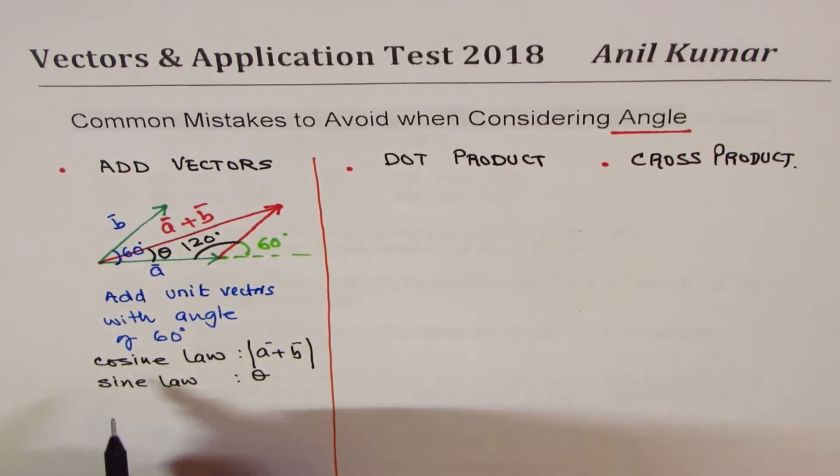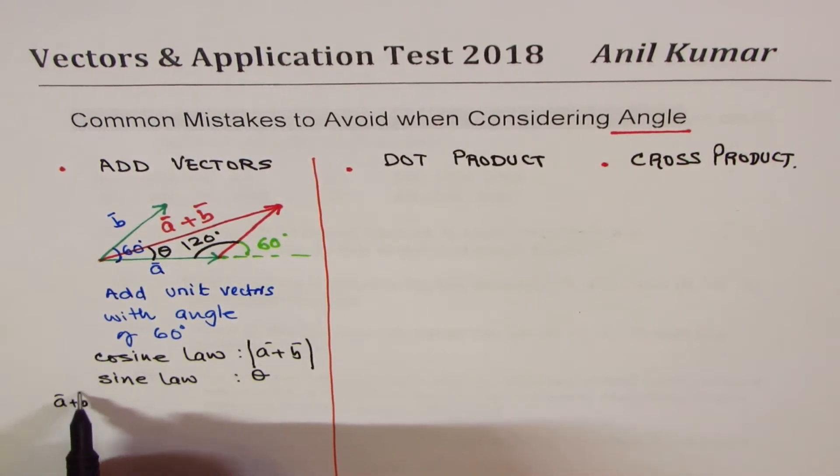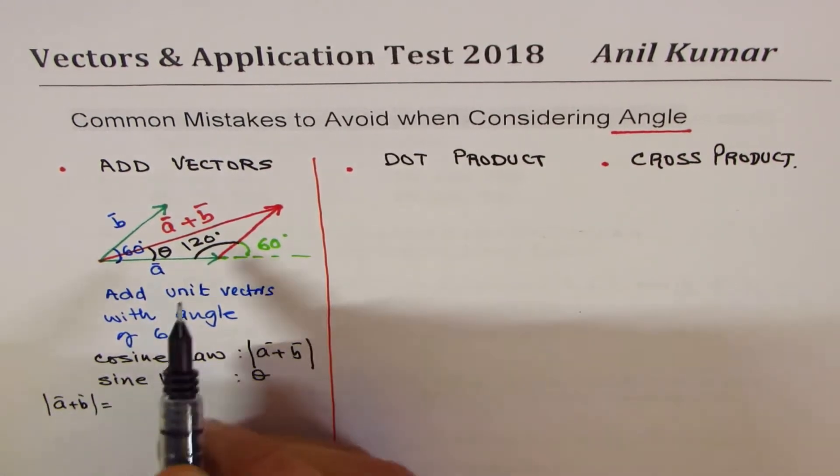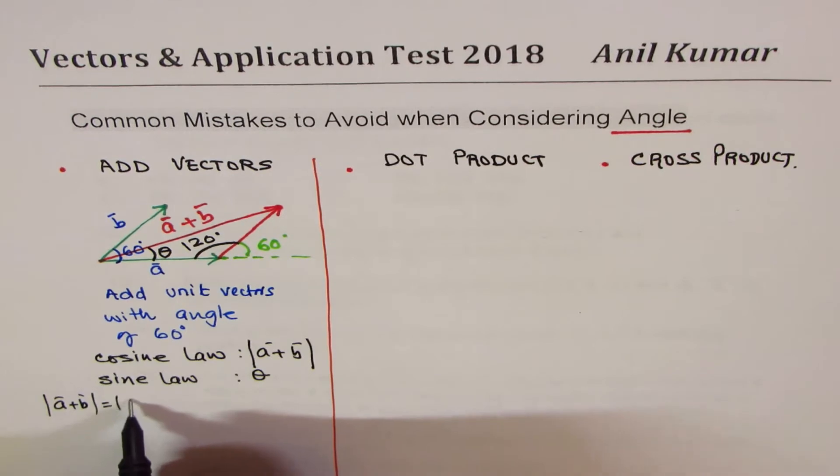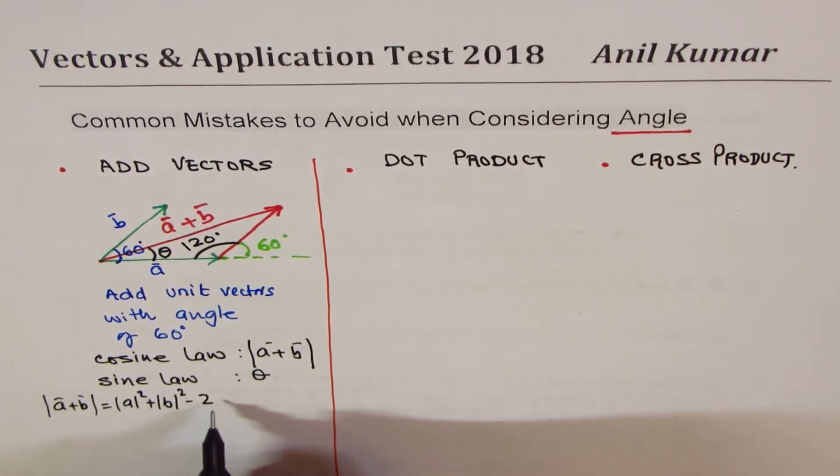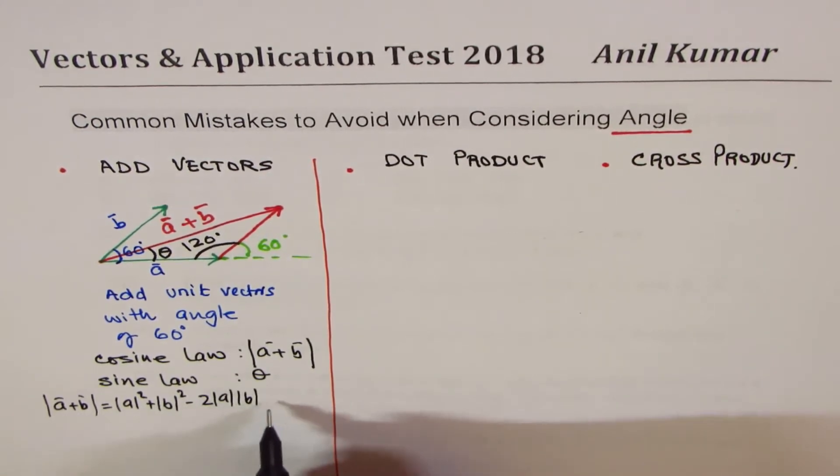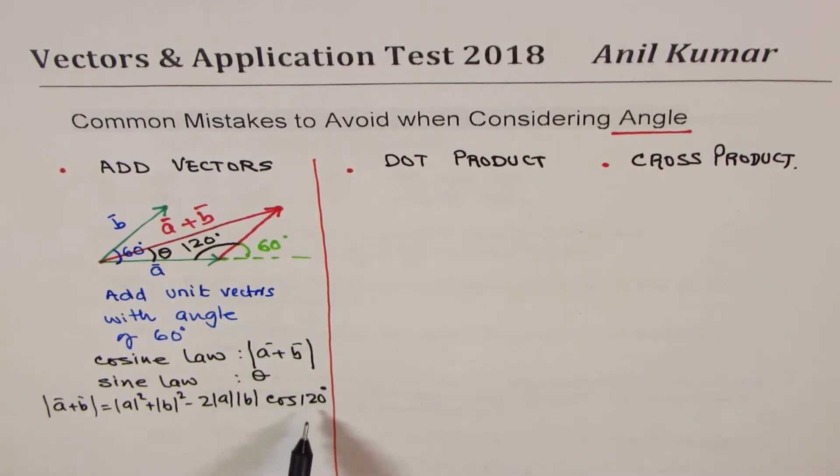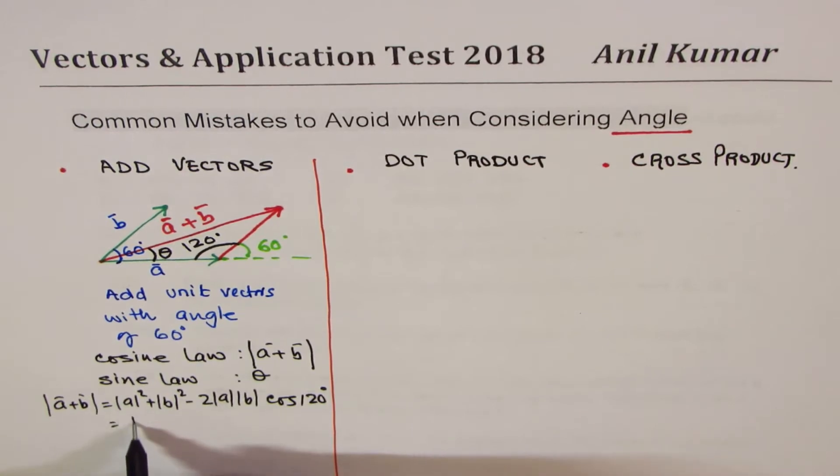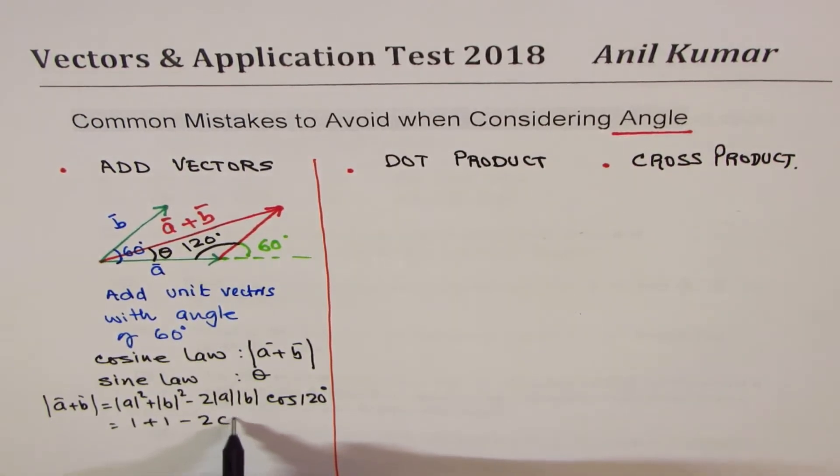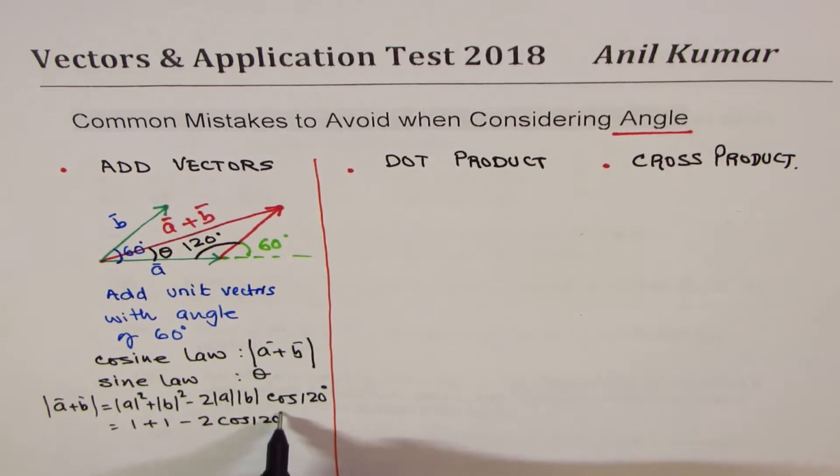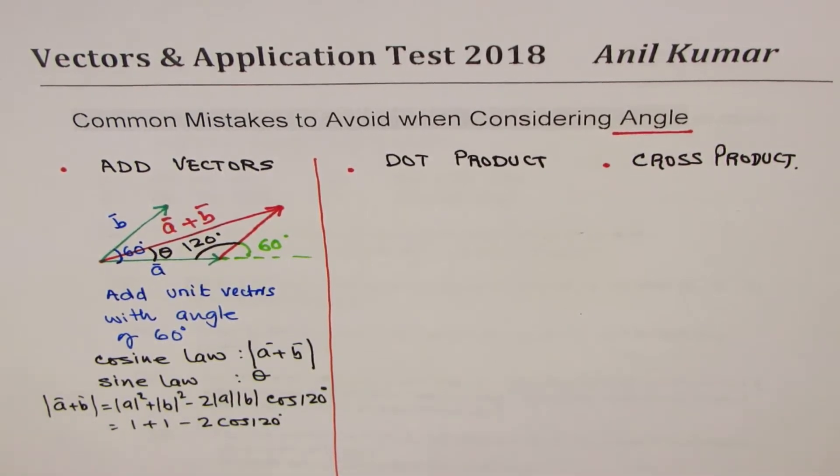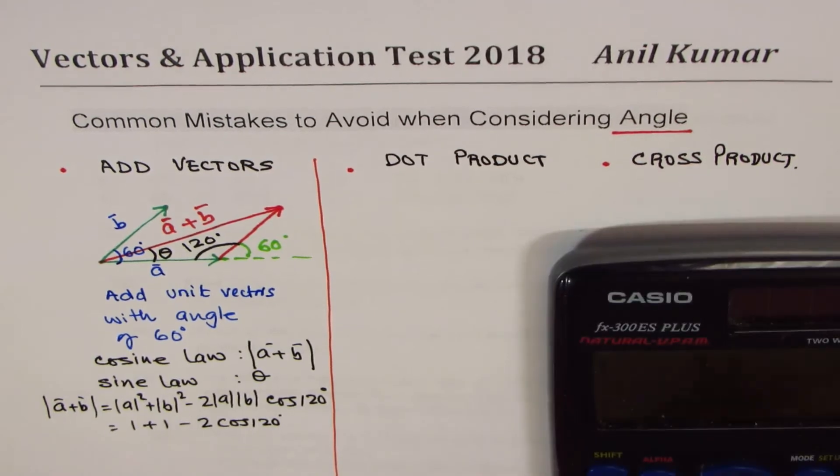So here, of course, let me write down here now. So a plus b magnitude is going to be a squared, so magnitude of a squared plus magnitude of b squared minus 2 times magnitude of a times magnitude of b, and cos of angle 120 degrees, not 60 degrees. And here we know both are 1, so because 1 plus 1 minus 2, cos of 120 degrees will give you the magnitude. So let's finish it off.